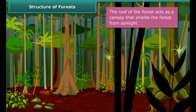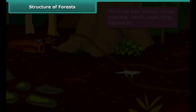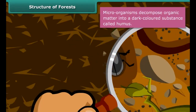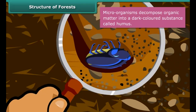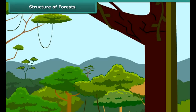The forest floor is hot and humid. It contains leaves, branches, insects, algae, and microorganisms like fungi and bacteria that are invisible to the naked eye. Microorganisms decompose organic matter into a dark colored substance called humus. Humus provides nutrients to plants and makes the soil fertile.